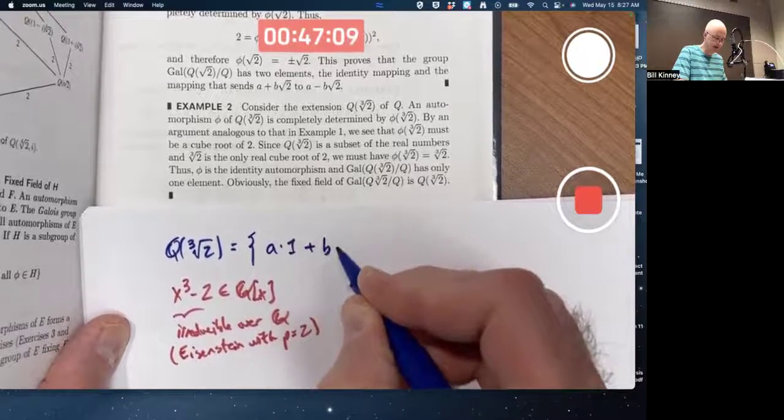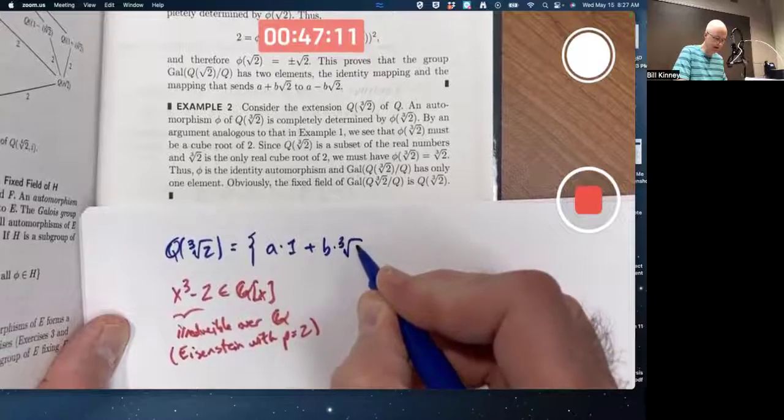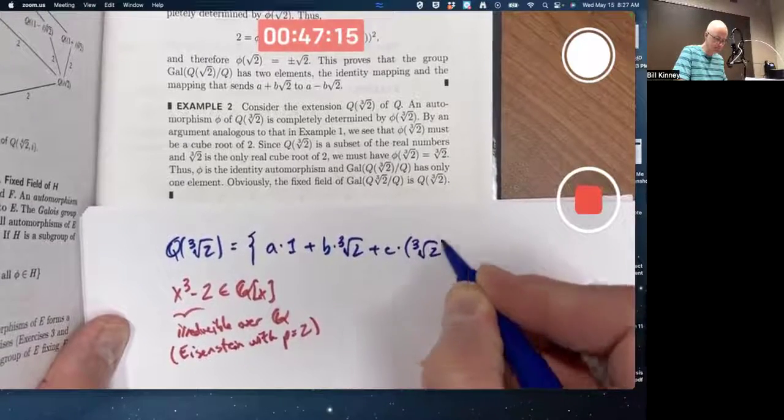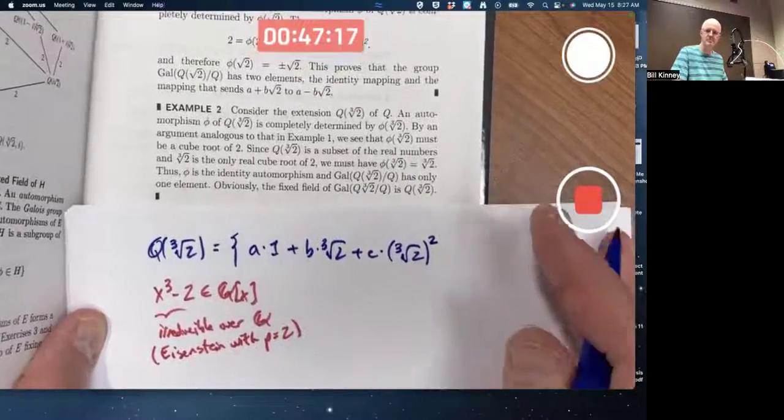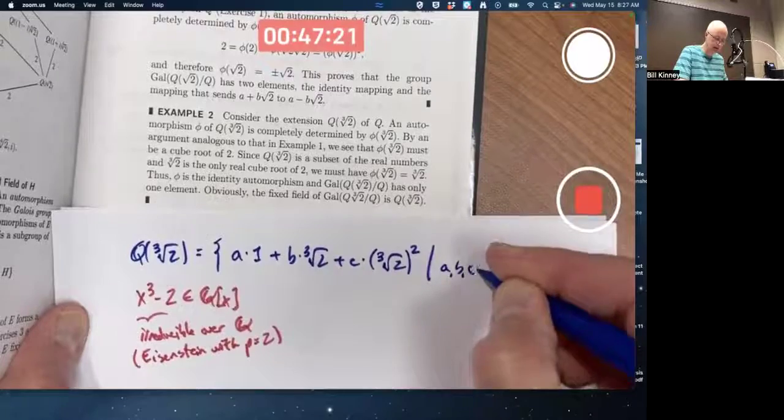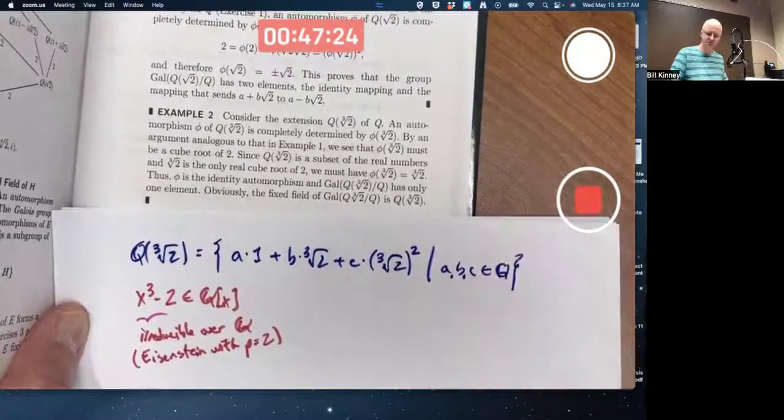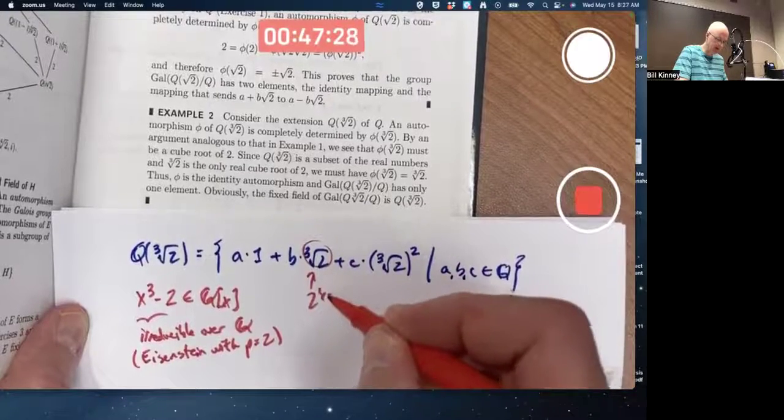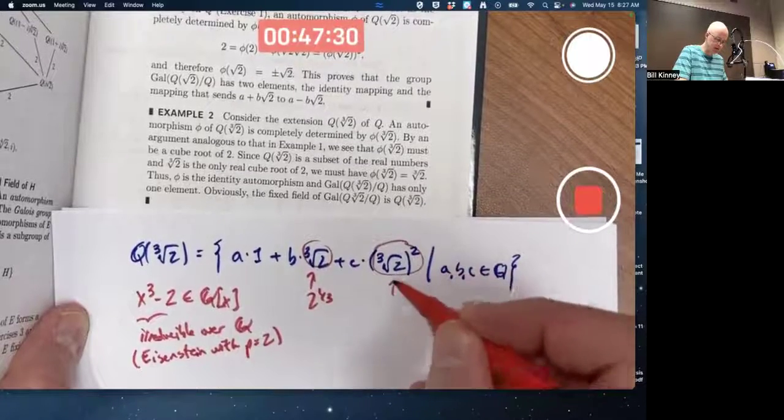I could write every element like this, where a, b, and c are rational numbers. And yes, it is fine to write that as 2 to the 1 third if you like and write this as 2 to the 2 thirds.